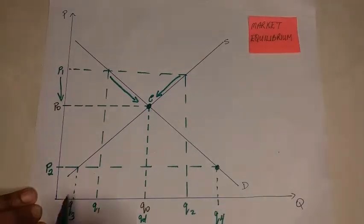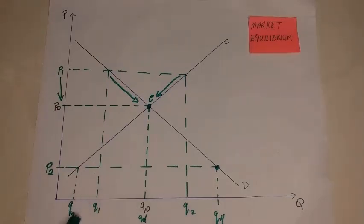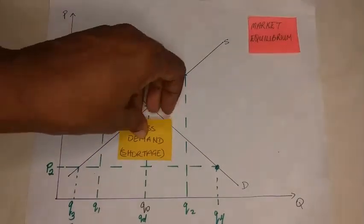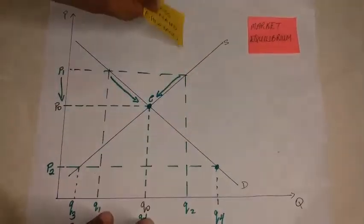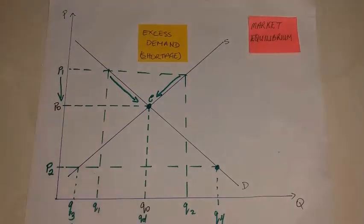Notice the quantity demanded, q4, is greater than the quantity supplied, q3. When we have a situation where quantity demanded is greater than quantity supplied, we have what is known as a shortage, or excess demand. Usually we have a situation where price would increase to ration the goods and services in supply. Looking at the tomato situation, when tomatoes are in short supply, that is when you would usually see prices of tomatoes being very high.